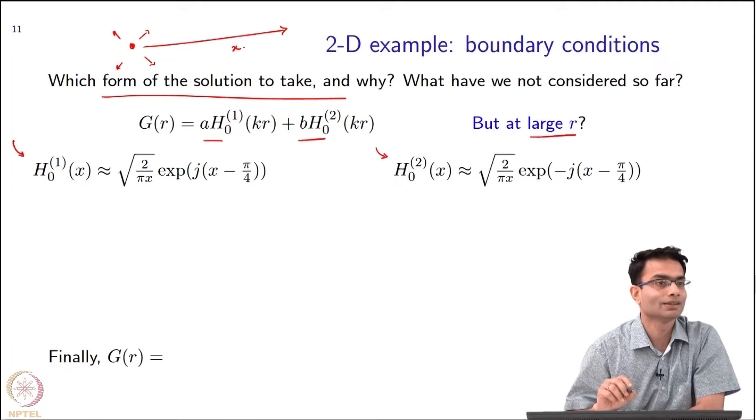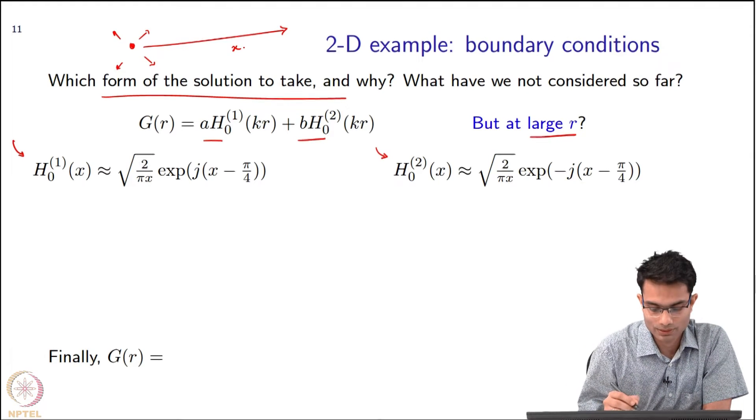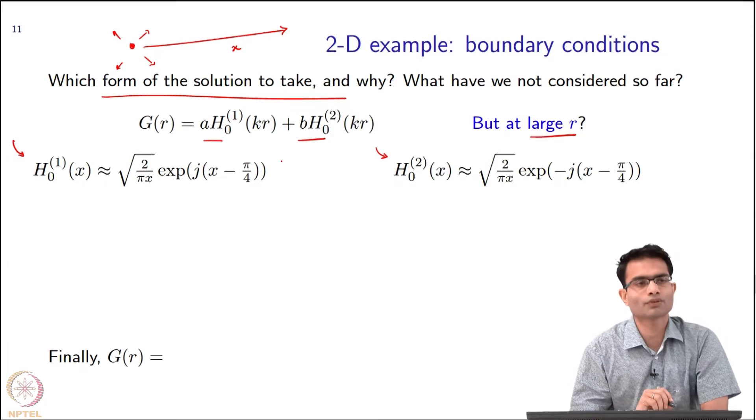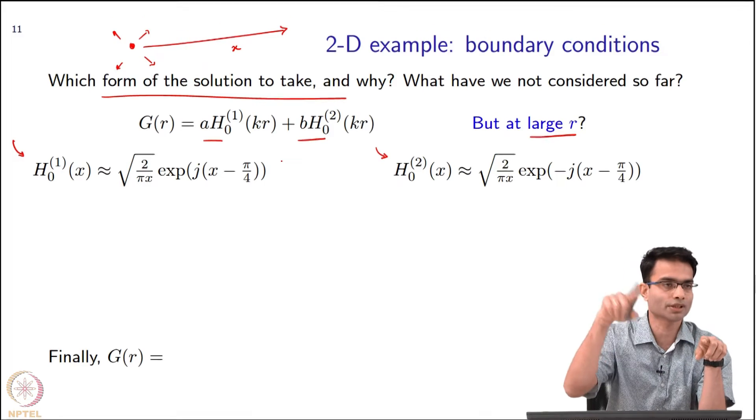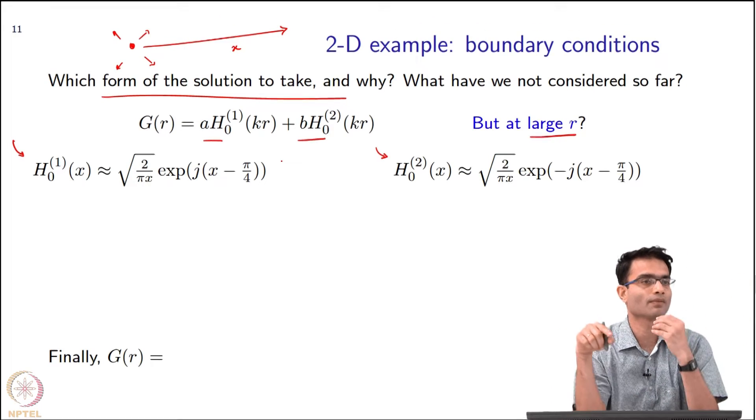E^(jωt). E^(jωt). Something has to counteract. Why does it have to counteract? It is a phasor which is constantly oscillating, but the amplitude is decaying. No problem.